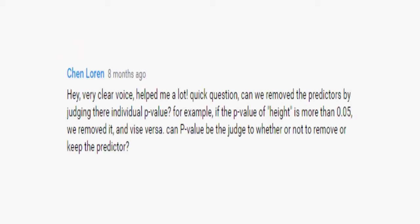Next question: can the p-value be the judge of whether or not to remove a predictor? When running the stepwise algorithm, there are two approaches for determining what goes in and out of the model at each step. One, testing-based procedures where you use the t-test or partial F-test for groups of related regressors such as factors. Two, criterion-based procedures which use some measure based on fit and complexity of the model, such as AIC, BIC, adjusted R-squared, or Mallows' CP. The criterion-based approach is recommended over the testing-based approach. With so much testing over all steps, there's a high chance the final model excludes important X's and includes irrelevant ones.